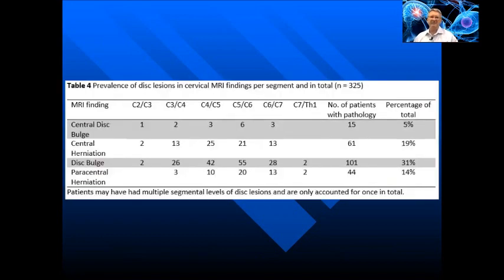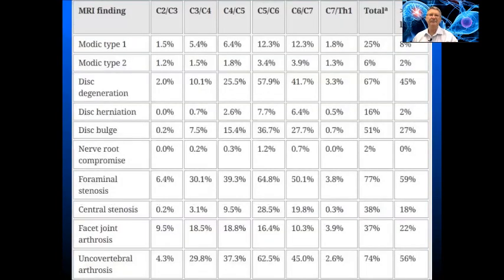If we look at disc lesions at various vertebral levels, we again see a somewhat higher prevalence at C5-C6 than we do at C4-C5 and C6-C7, and above and below, even less.